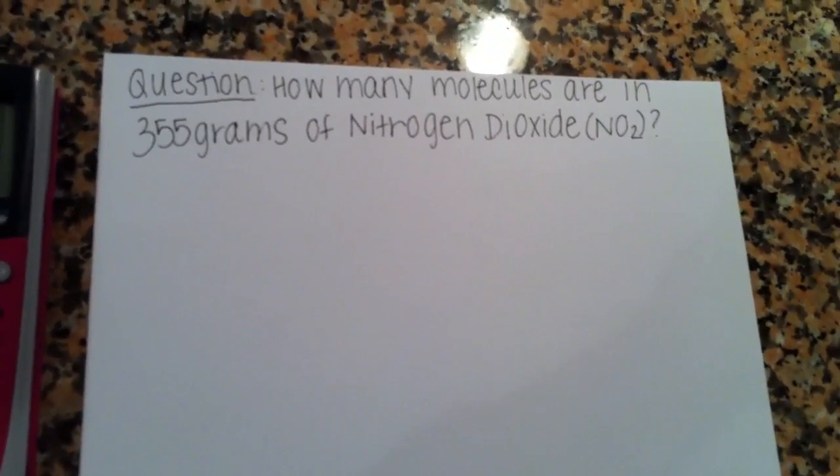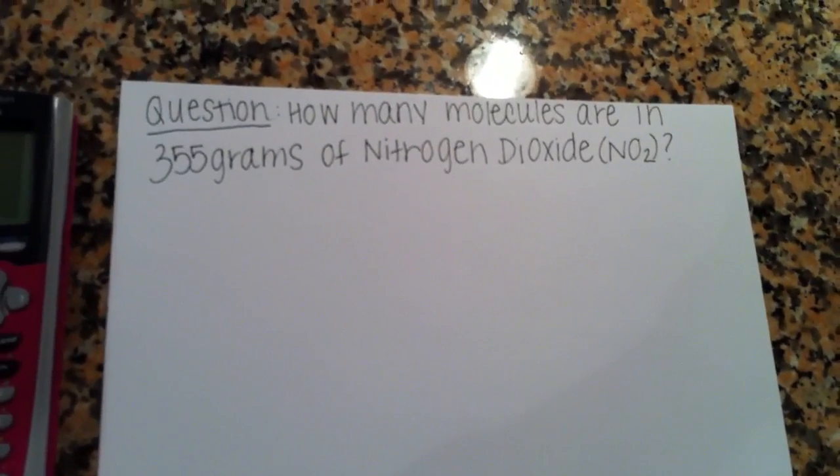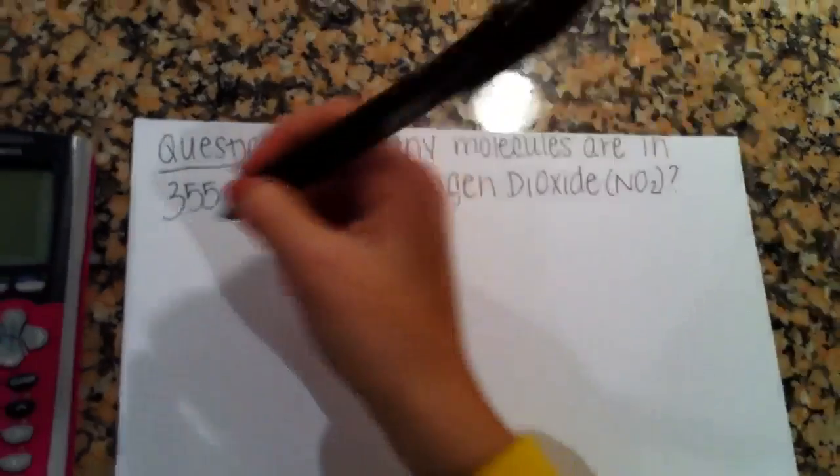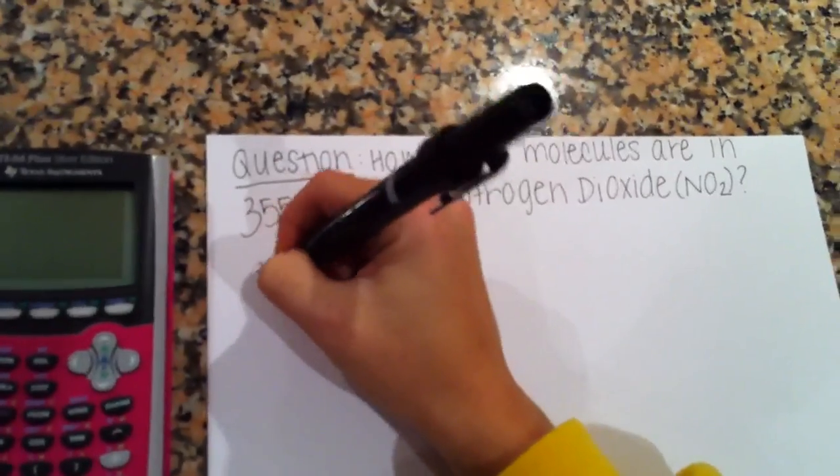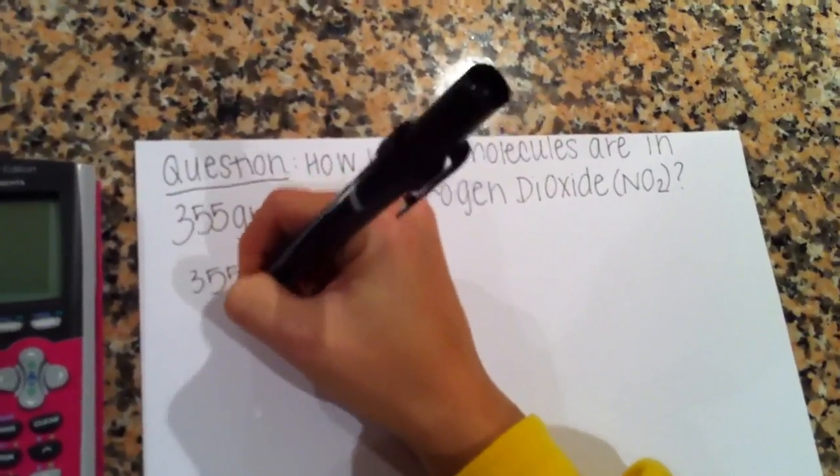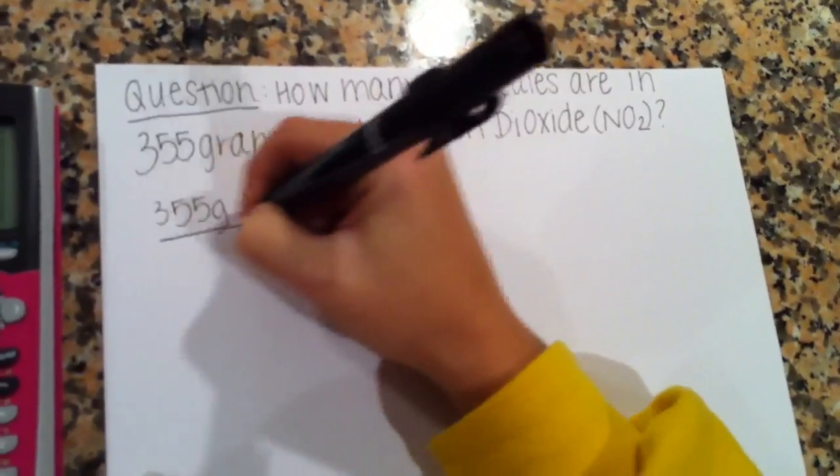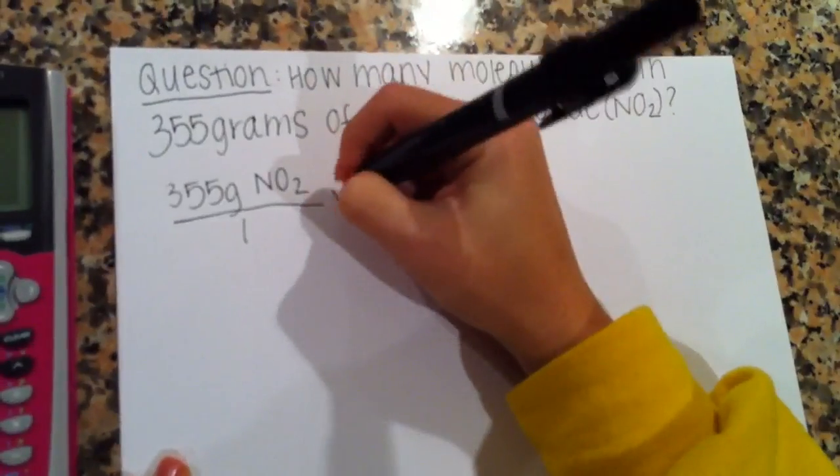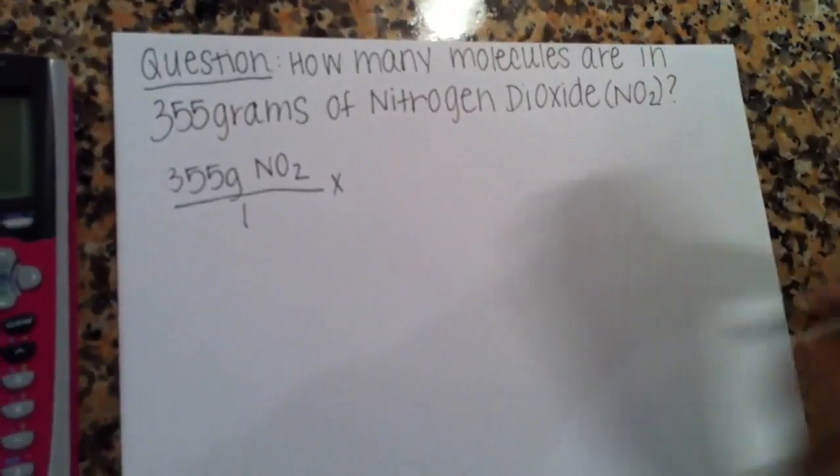How many molecules are in 355 grams of nitrogen dioxide? So first we take our 355 grams of NO2 and we put it over 1. Now we have to find the mass of NO2.